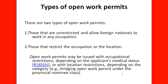Open work permits may be issued with conditional restrictions depending on the applicant's medical status, as per Regulation 185B, or with location restrictions depending on the category, such as a bridging open work permit under the provincial nominee class. You will see in some work permits that the officer has noted the applicant cannot work in health services, cannot work with children, cannot work in school facilities, or cannot work in agriculture jobs, depending on location or country of origin.